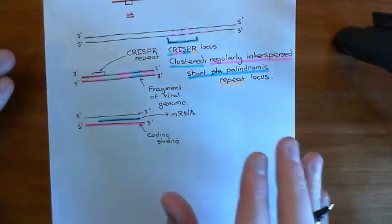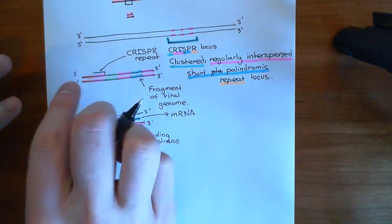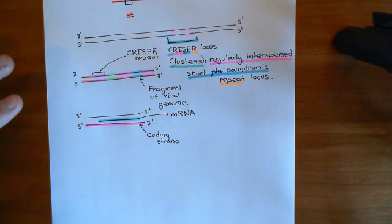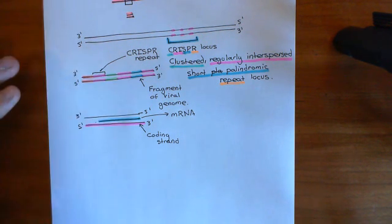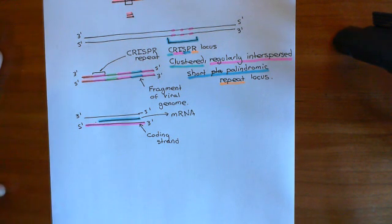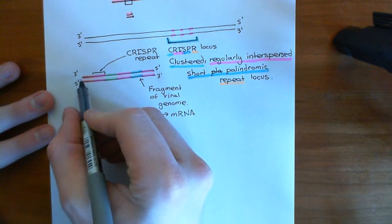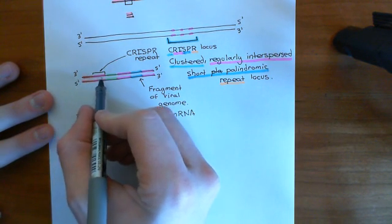It results in all your progeny cells — so when you divide and produce daughter cells — all of those will have this new portion of the viral genome integrated into their CRISPR locus. So all your daughter cells will have this viral genome fragment within their CRISPR locus. Basically they're all going to be immune against the viral infection now; the virus is not going to be able to take hold of them. They are all protected. Now what you can do is transcribe this CRISPR locus.